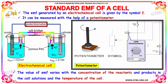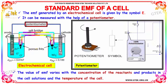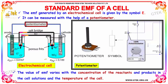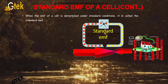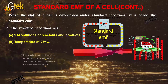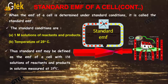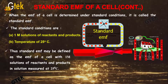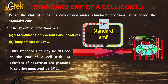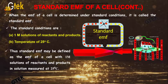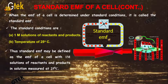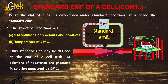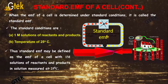The value of EMF varies with the concentration of reactants and products in the cell solutions and the temperature of the cell. When the EMF of a cell is determined under standard conditions, it is called the standard EMF. The standard conditions are 1M solutions of reactants and products, and a temperature of 25 degrees Celsius.